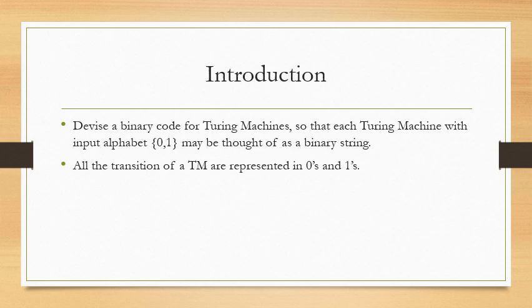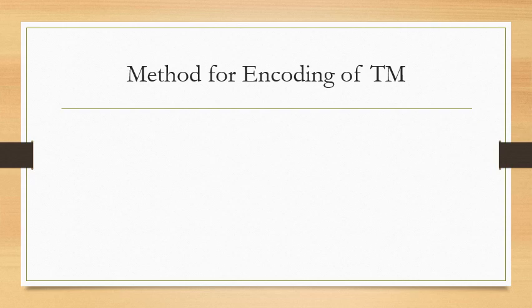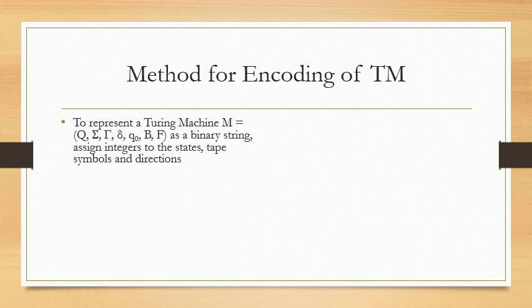A Turing machine is represented by a seven-tuple notation: Q, Σ, Γ, δ, q0, B, and F. Here Q is the set of all states, Σ is the input alphabet, Γ is the tape alphabet, δ is the transition function whose output is a triplet, q0 is the starting state, B is the blank symbol, and F is the set of one or more accepting states.